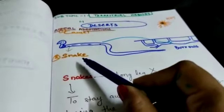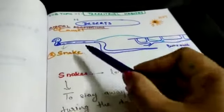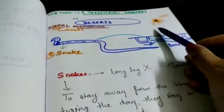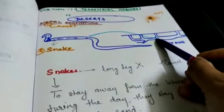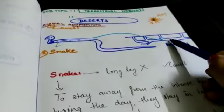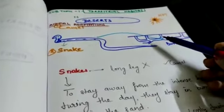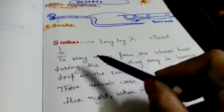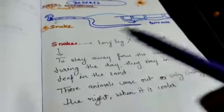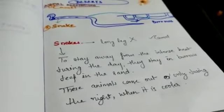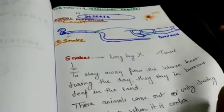About animals adaptations, we already discussed camel. Now about snake. Snake doesn't have long legs like camel, so how can they survive when the temperature is very hot during daytime? They live in burrows under the sand. During daytime they stay in these holes, and during nighttime they come out for their food, to stay away from the intense heat. These animals come out only during the night when it is cooler.